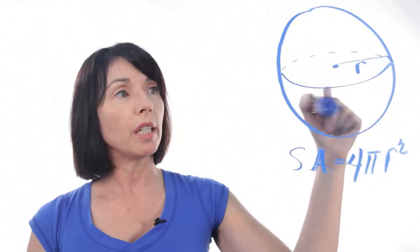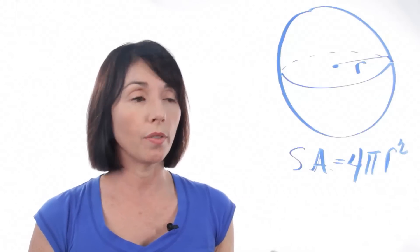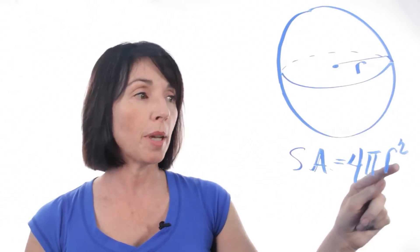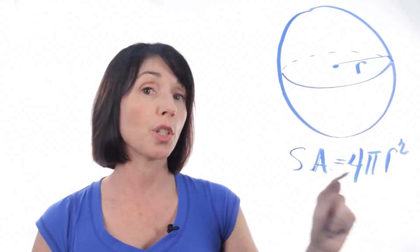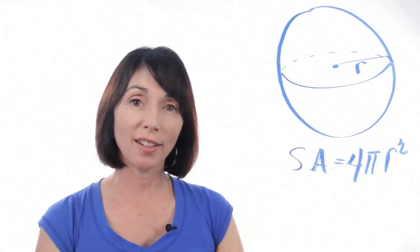Now remember that if your radius is measured in any kind of units, feet or inches or whatever, your surface area will then be measured in square units because you're going to square the radius. And that's it. That's how you calculate the surface area of a sphere.